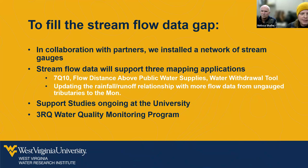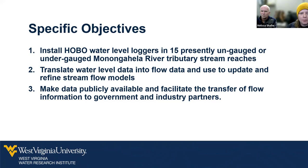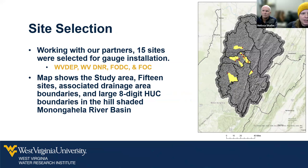To fill this gap in streamflow data, in collaboration with partners we installed a network of stream gauges throughout the watershed. This information will help support three mapping applications: the 7Q10, the flow distance above public water supplies, and the water withdrawal tool. The specific objectives were to install 15 HOBO water level loggers in presently ungauged and undergauged Monongahela River tributary systems or reaches. The map shows the 15 sample locations, their associated drainage areas, and the HUC-8 boundary of the Monongahela watershed.